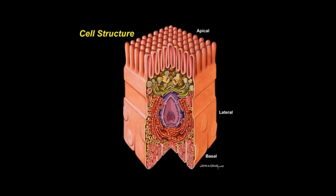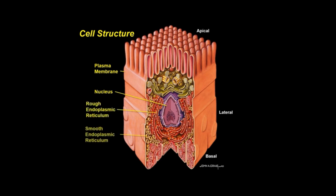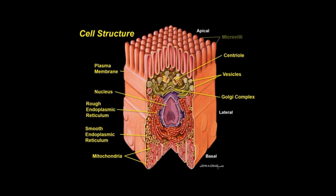Here is a typical cell seen schematically by electron microscopy. In polarized cells such as this one, the plasma membrane has basal, lateral, and apical surfaces. The cytoplasm contains organelles and inclusions surrounding a nucleus. The main membrane-bounded organelles are the rough and smooth endoplasmic reticulum, mitochondria, Golgi complex, and vesicles. The centriole consists of microtubules and is part of the cytoskeleton. In some epithelial cells, the apical border has many finger-like extensions called microvilli.